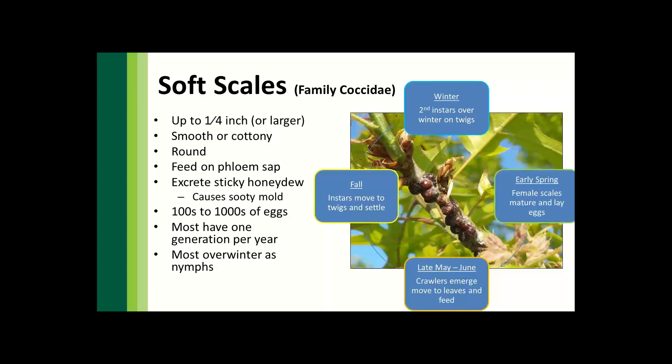On the right, you can see a general life cycle for most soft scales. Crawlers — what we commonly call the nymphs — emerge typically and move to the leaves and feed in that late May to June period. Some scales like magnolia scale can be later into July or August, but most are going to be in the early spring.